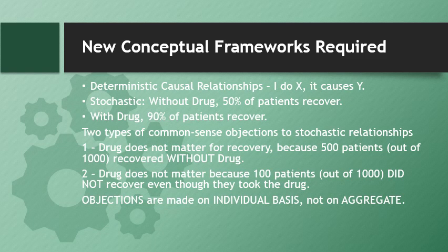Two types of common objections are made to this concept. People say: if a thousand people have the disease and 500 recover without the drug, this means the drug is not necessary for recovery. Similarly, people say: these hundred people among the thousand took the drug and did not recover, meaning the drug is not a cure. Both objections arise from looking at individual cases, but they cannot be handled at the individual level — only at the aggregate level when you look at the group as a whole.